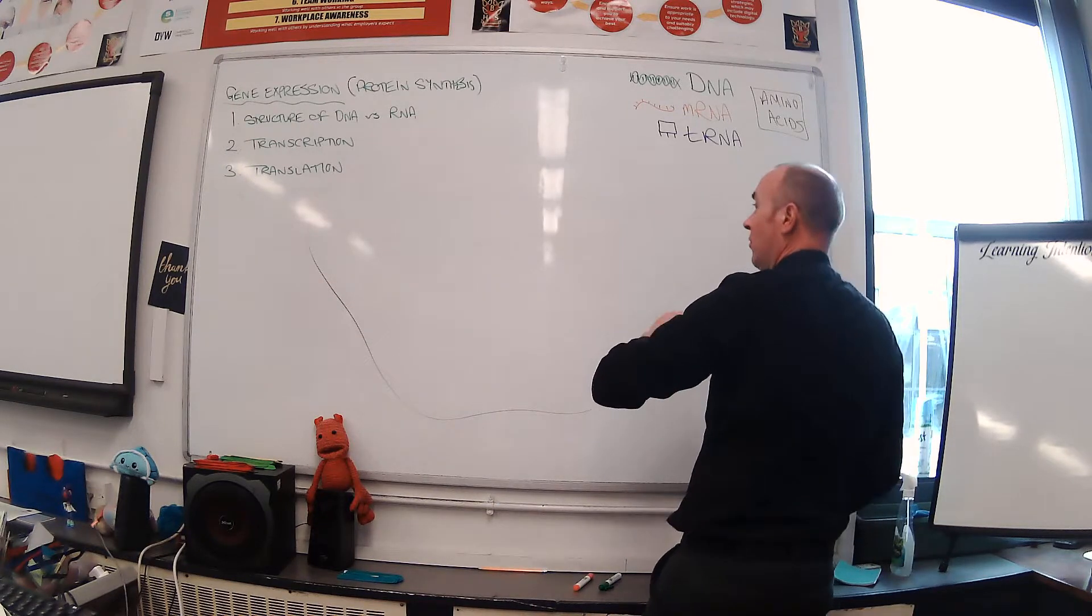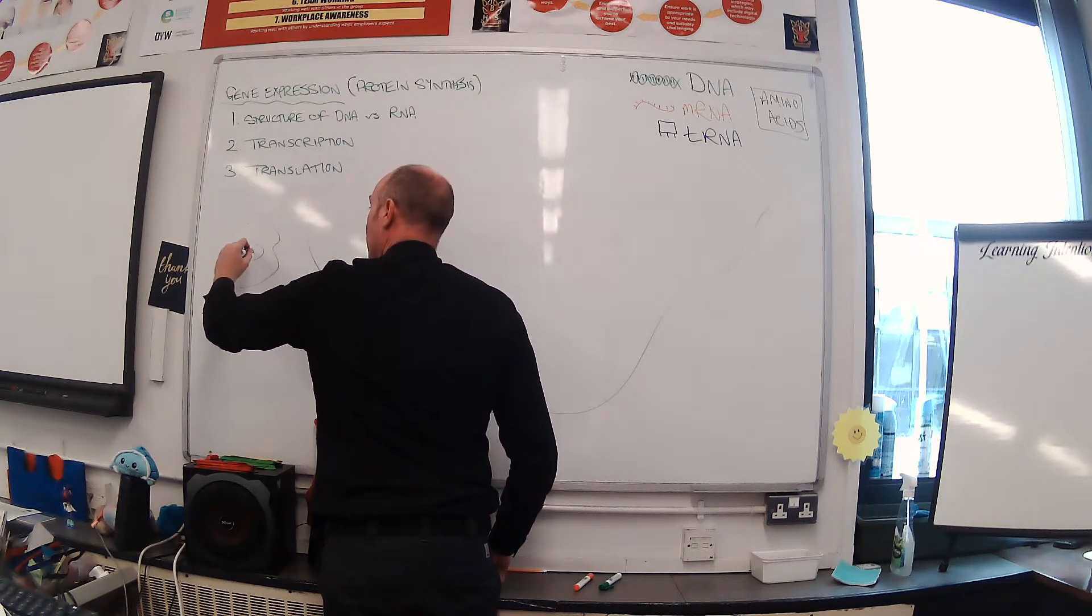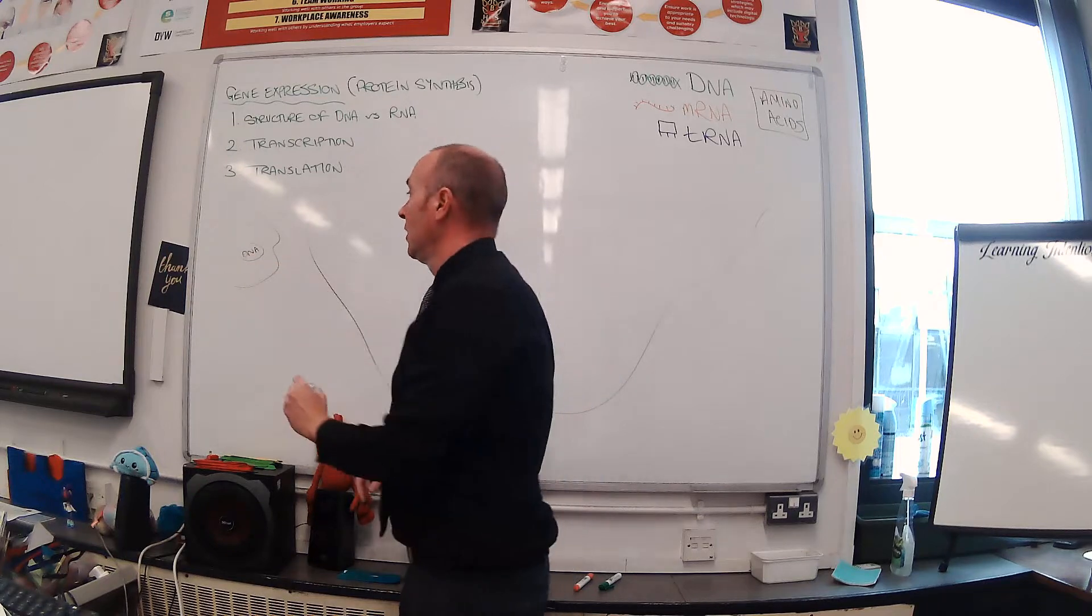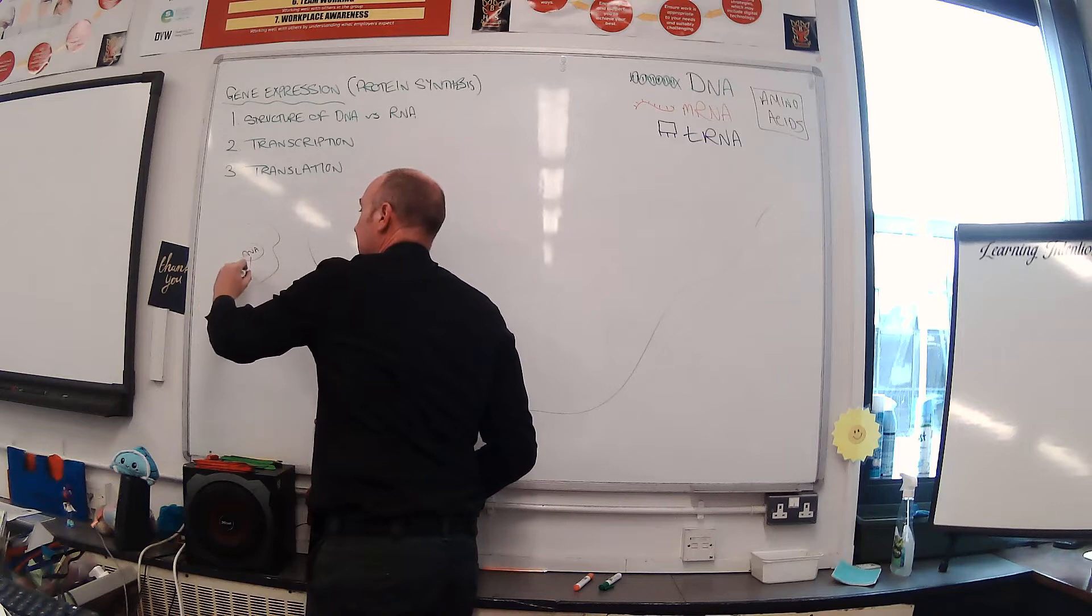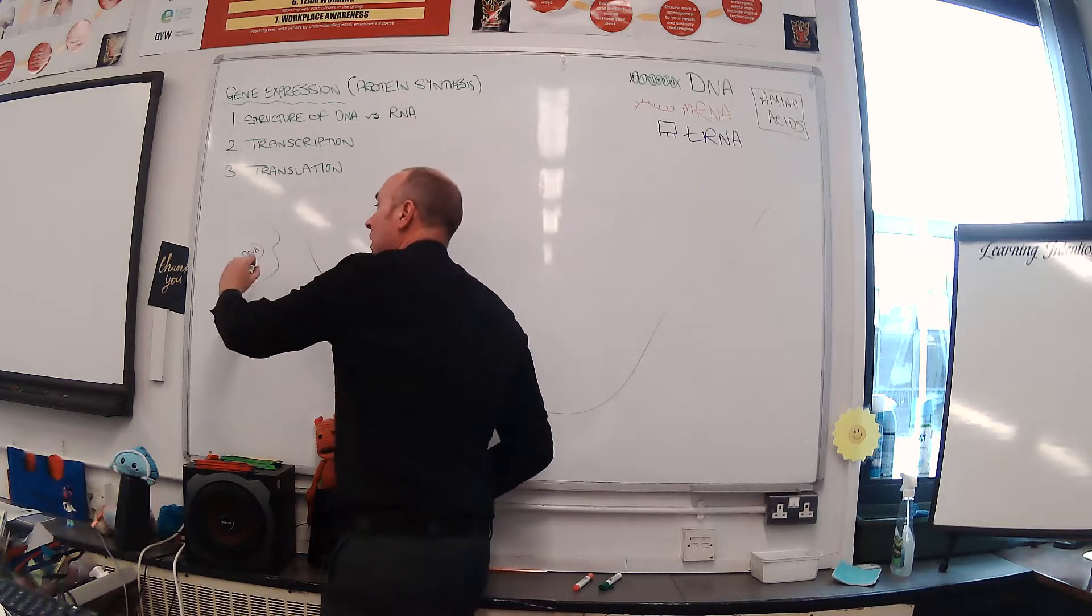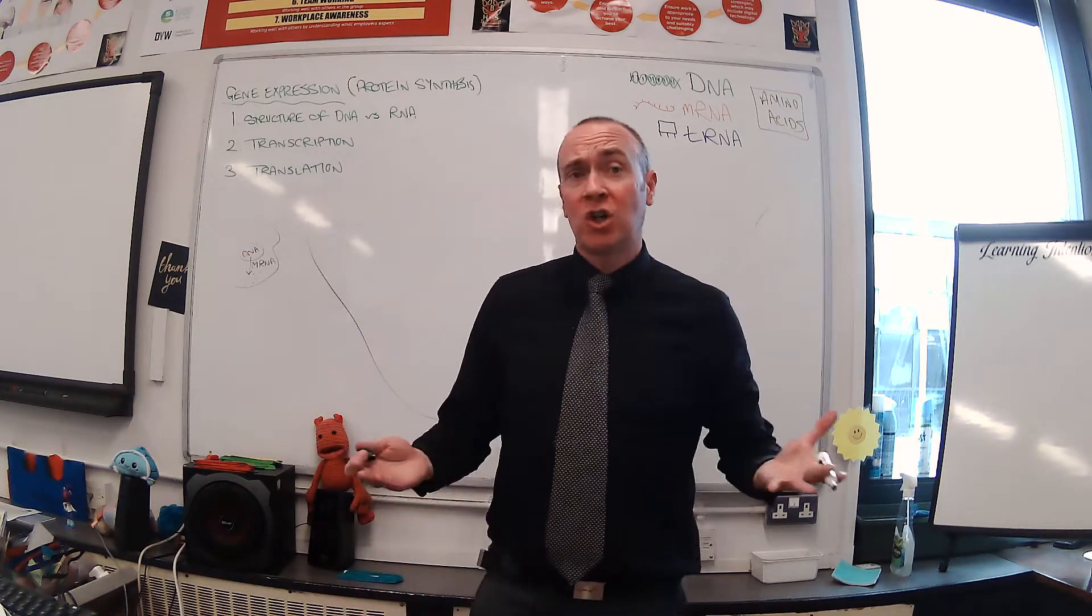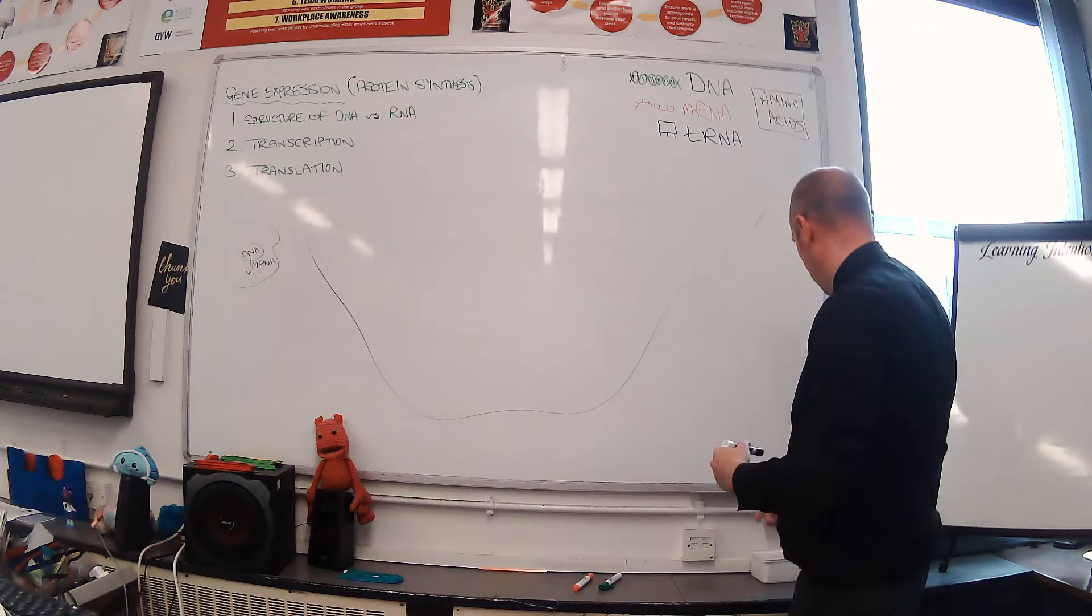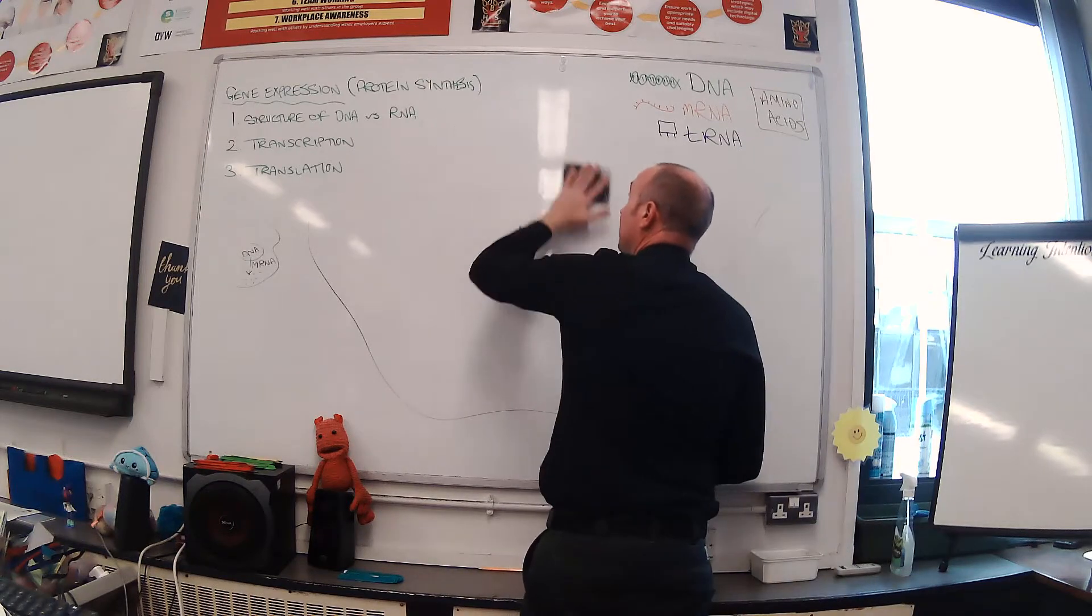What I'm going to do is draw a large version of the cell to remind you from national five. The problem a cell had was that the DNA is found in the nucleus, but where the protein's actually made is at the ribosome. So in order to get the genetic information from the DNA in the nucleus to the ribosome in the cytoplasm, we need mRNA.